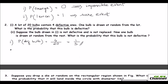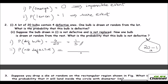In the second part, suppose the bulb drawn is not defective and it is not replaced. You had 20 bulbs, one was picked out, so 19 remain. Out of these 19, the four defective bulbs are still there since the one removed was good. So the favorable outcomes — non-defective bulbs — are 19 minus 4, which equals 15. The probability of getting a non-defective bulb is 15 over 19.